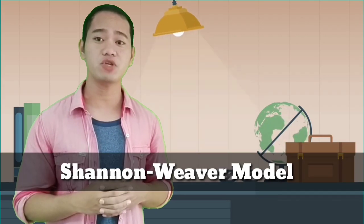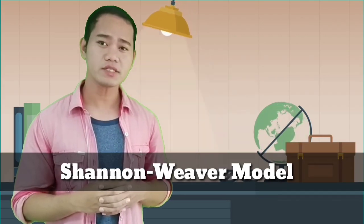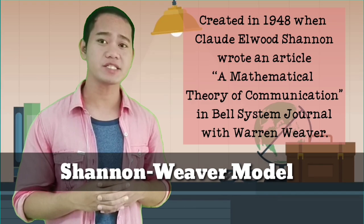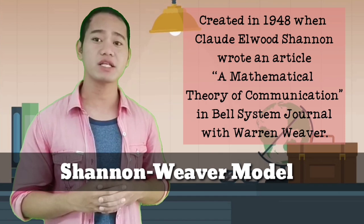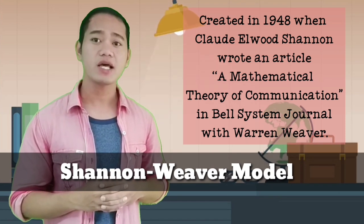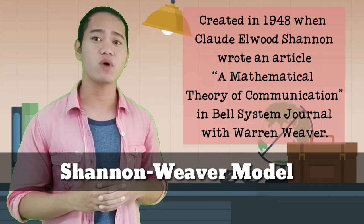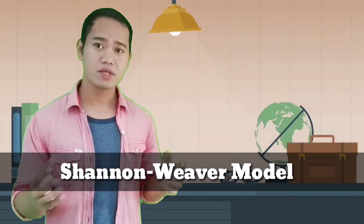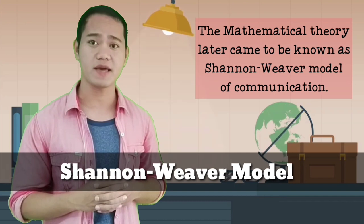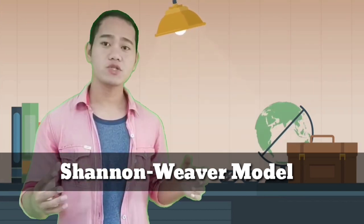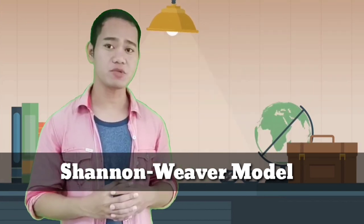The second model is the Shannon Weaver Model of Communication. This model was created in 1948 when Claude Elwood Shannon wrote an article, A Mathematical Theory of Communication, in Bell System Journal with Warren Weaver. The mathematical theory later came to be known as Shannon Weaver Model of Communication. To better understand this model of communication, let us first define these important elements based on their functions.